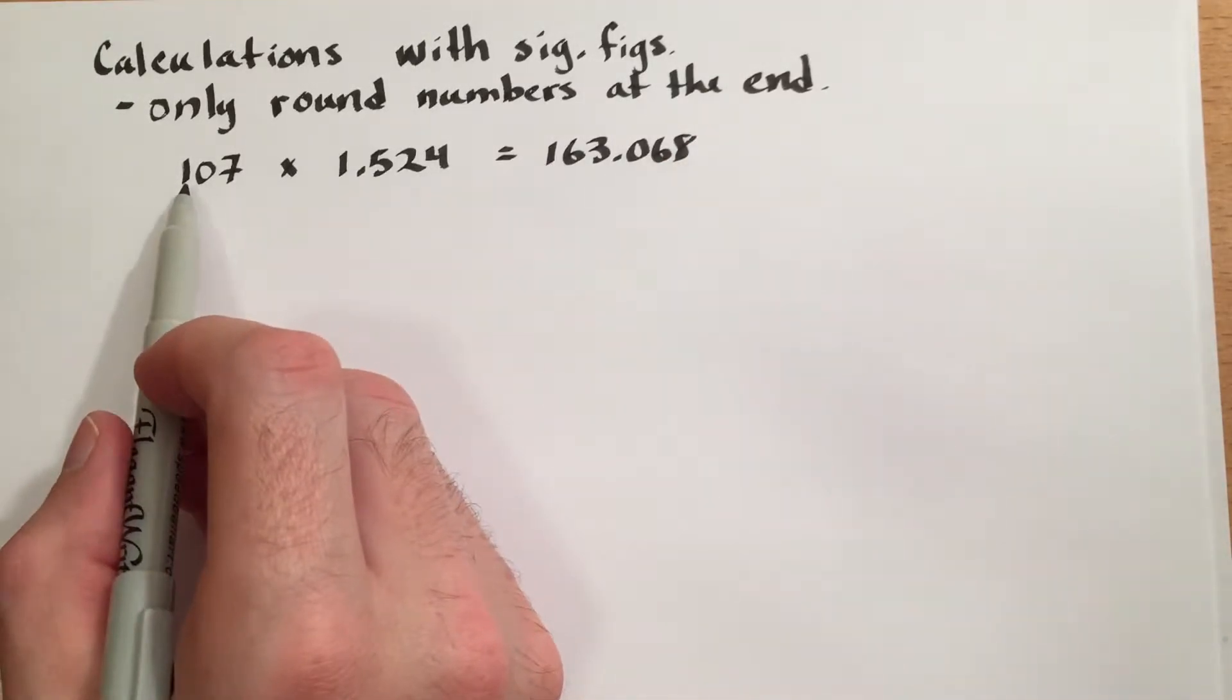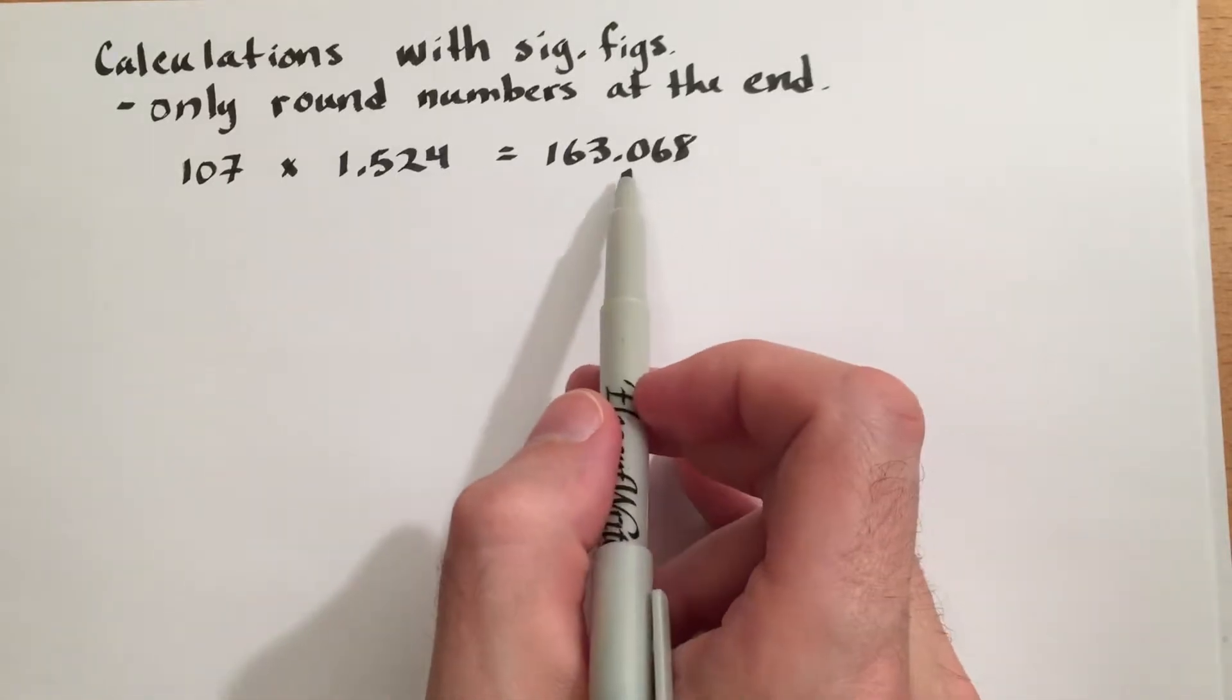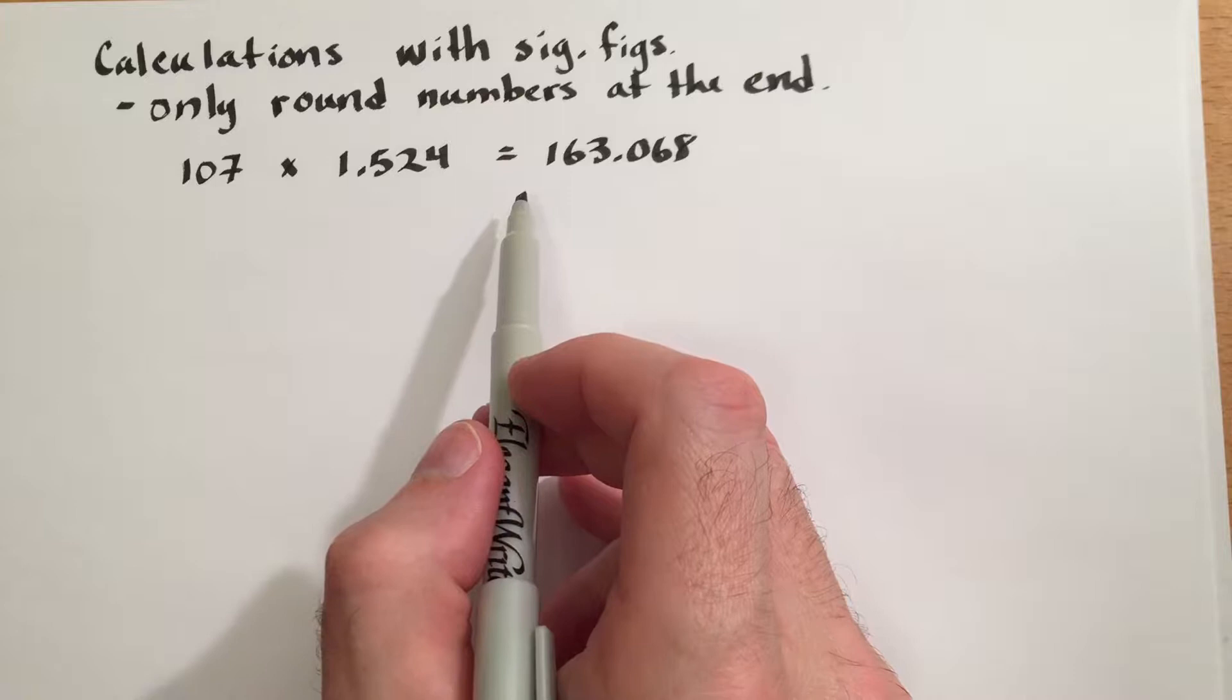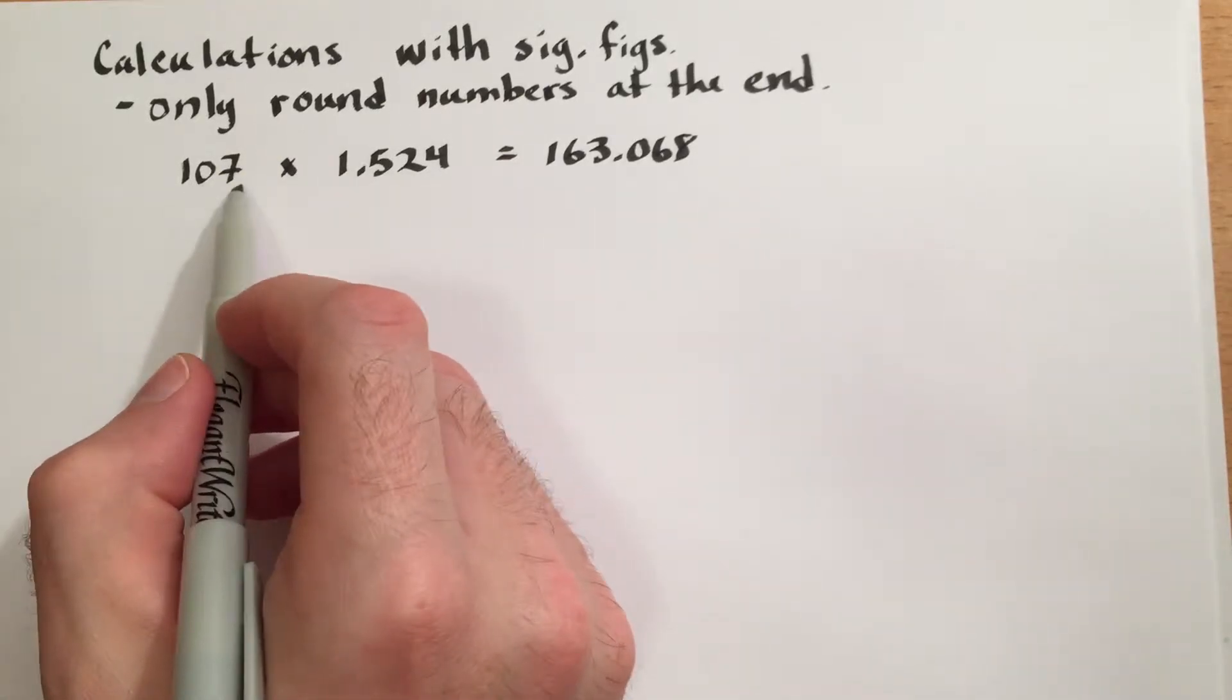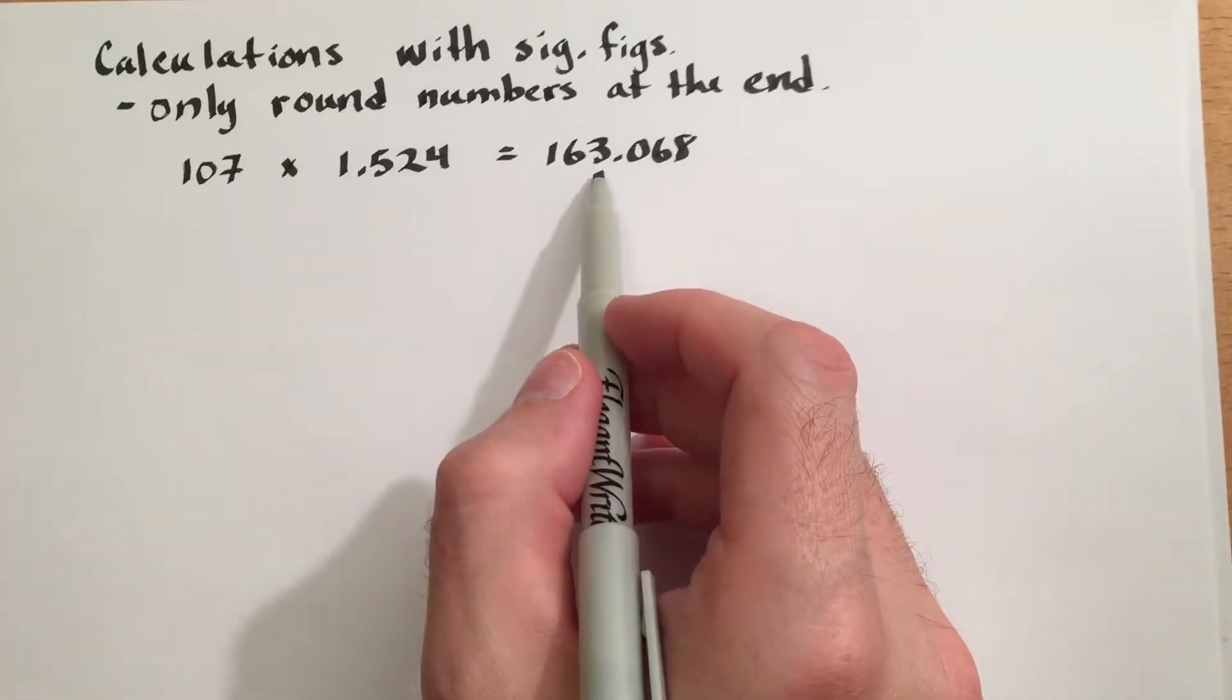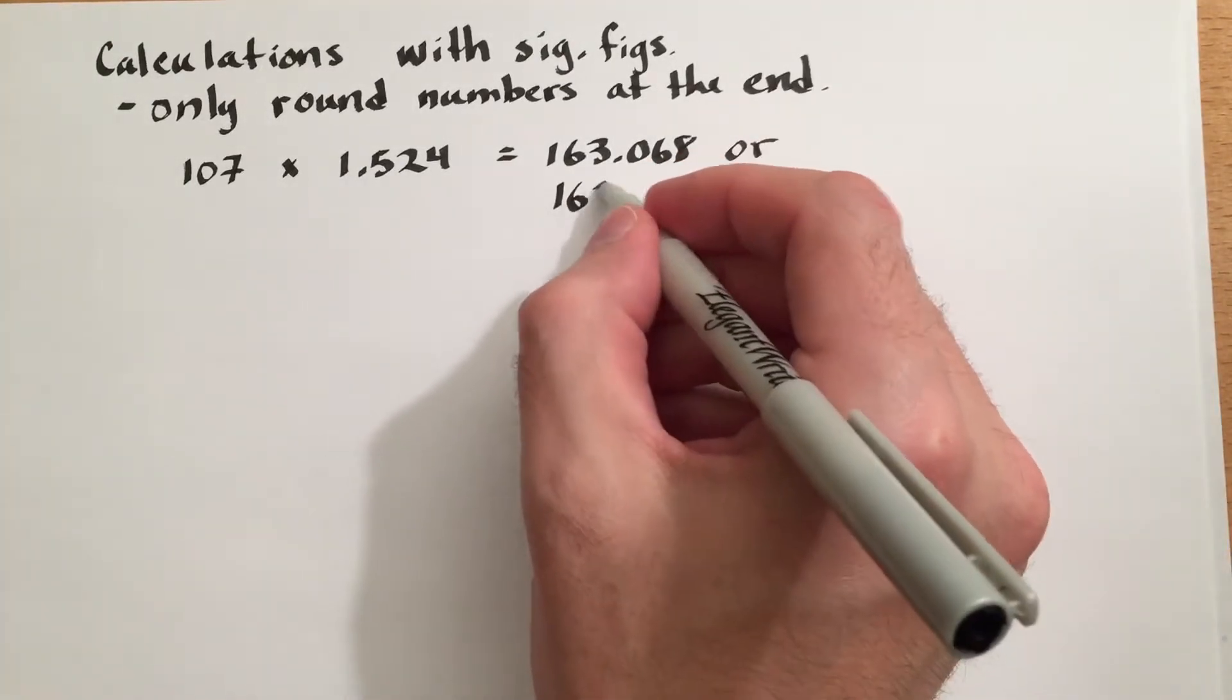The 107 only has 3 significant figures, the 1.524 has 4, and our answer currently has 6. The rules are that multiplication must be rounded to the number with the fewest significant figures, which is the 107. That only has 3 significant digits, therefore we must round our answer to 3 significant digits, or simply 163.